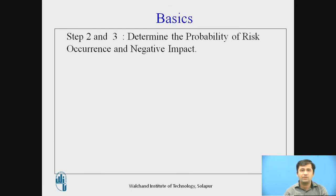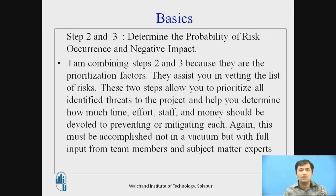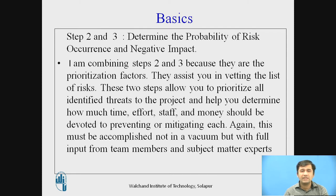Step 2 and 3: Determine the probability of risk occurrence and negative impact. I am combining Step 2 and 3 because they are prioritization factors. They assist you in vetting the list of risks. These two steps allow you to prioritize all identified threats to the project and help you determine how much time, effort, staff, and money should be devoted to preventing or mitigating each. This must be accomplished not only in vacuum but with the full input from team members and subject matter experts.